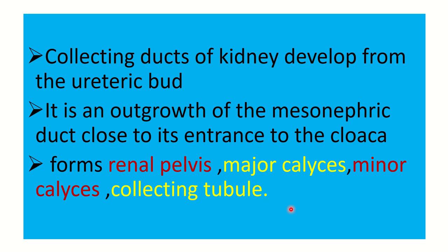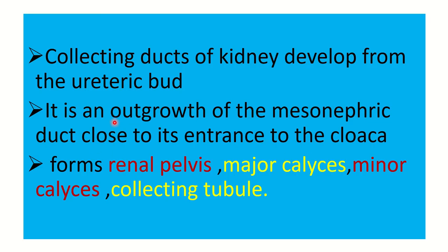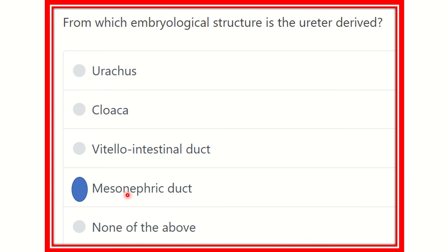The collecting ducts of the kidney develop from the ureteric bud, which is an outgrowth of the mesonephric duct. So the ureteric bud is a part of the mesonephric duct. This outgrowth forms the renal pelvis, major calyx, minor calyx, and other collecting tubules — these are the excretory components of the urinary system.